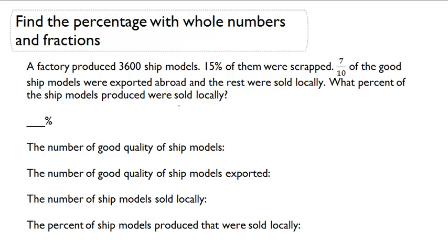We're going to solve this problem in four steps. First, we have to take into account that 15% of the 3600 ship models were scrapped. So let's figure out how many were left over after the scrapping. So it will be 3600 times 100% minus 15%, and that will leave us with 3060.